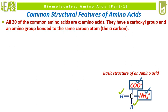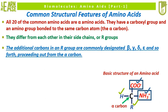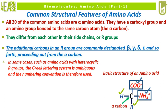They have a carboxyl group and an amino group bonded to the same carbon atom, which is known as the alpha carbon. The alpha carbon is shown with the green arrow in the image below. Amino acids differ from each other in their side chains, also represented as R groups. The additional carbons in an R group are commonly designated as beta, gamma, delta, epsilon, and so forth, proceeding out from the alpha carbon. In some cases, such as amino acids with heterocyclic R groups, the Greek lettering system is ambiguous and the numbering convention is therefore used.